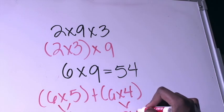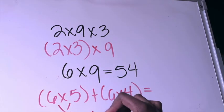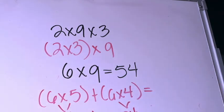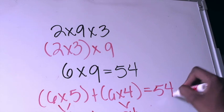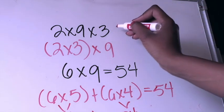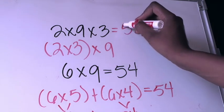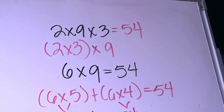That would be 24, even though the writing is a little bit messy, and then that would also give me a product of 54. So I know then that 2×9×3 is going to be 54.